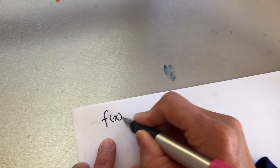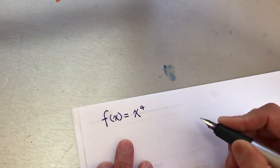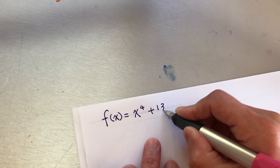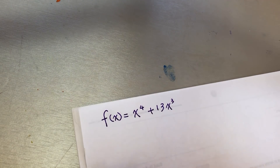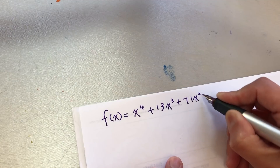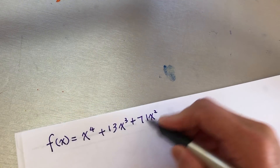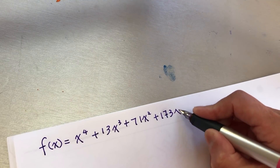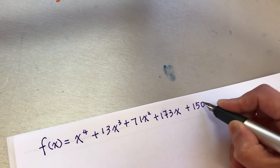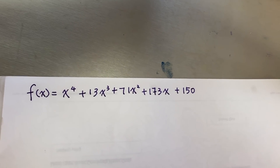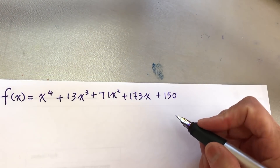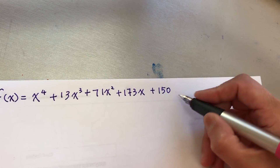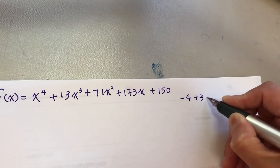I will copy this problem first, and then we will start to do it. f(x) equals x to the power of 4, plus 13x cubed, plus 71x squared, plus 173x plus 150. And one given zero is negative 4 plus 3i.